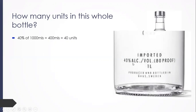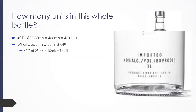Here's another example: how many units are in a 25 mil shot of this vodka? Pause the video and do your calculation. We just need to work out 40% of 25 mils, which is 10 mils. As already mentioned, 10 mils is one unit of alcohol. Therefore, a 25 mil shot of 40% vodka is one unit of alcohol.